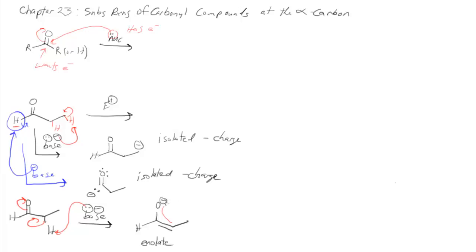The best way to draw an enolate usually is with the charge on oxygen because oxygen is more electronegative than carbon and would rather have a negative charge. However as you will learn this chapter a lot of times it reacts more at this carbon end than it does at the oxygen end.